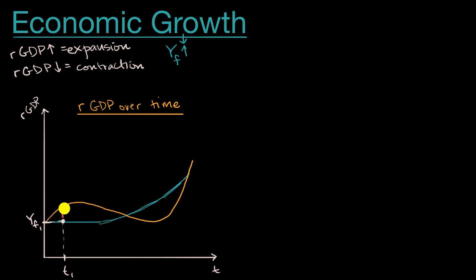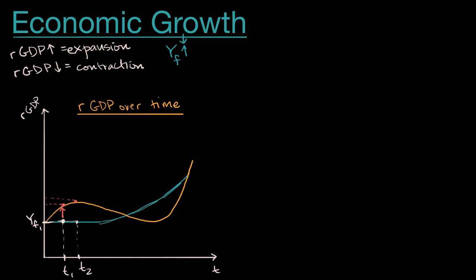If we go from that point in time and fast forward a little bit to T sub two, the full employment output Y sub F right here is flat. So according to this, we would not have experienced any economic growth from T sub one to T sub two, even though real GDP would have grown — we would have grown from this point to this point. So one way to think about it is: we are expanding as long as this curve is upward sloping, but if the full employment output is not changing, we are not experiencing economic growth.